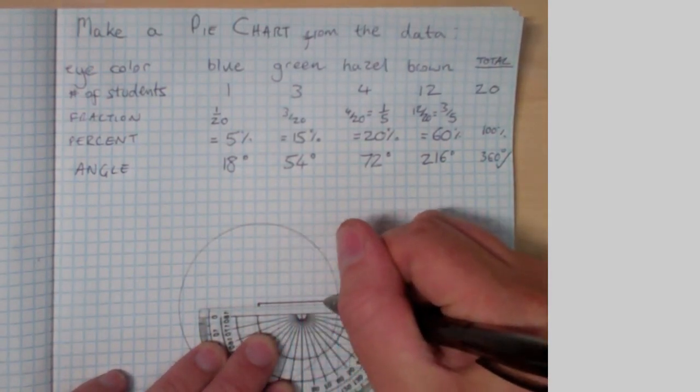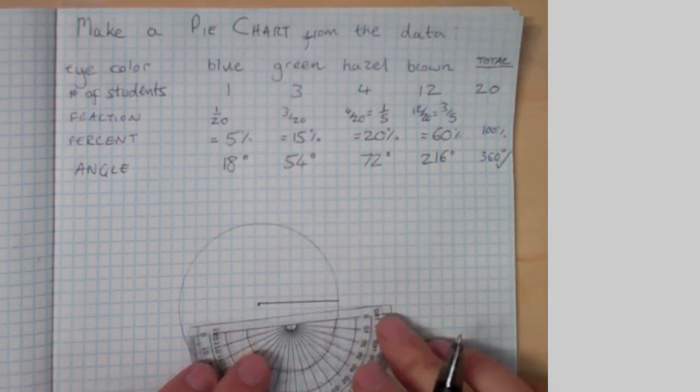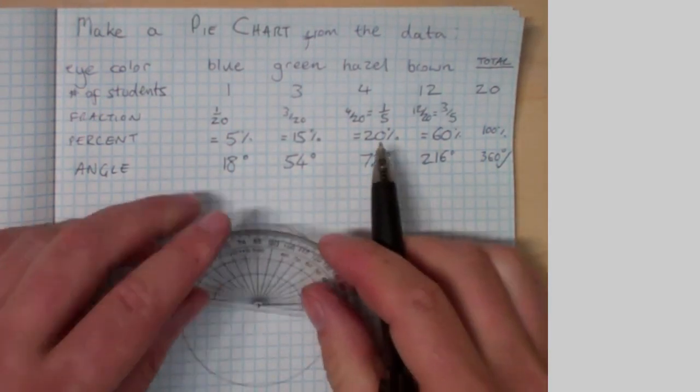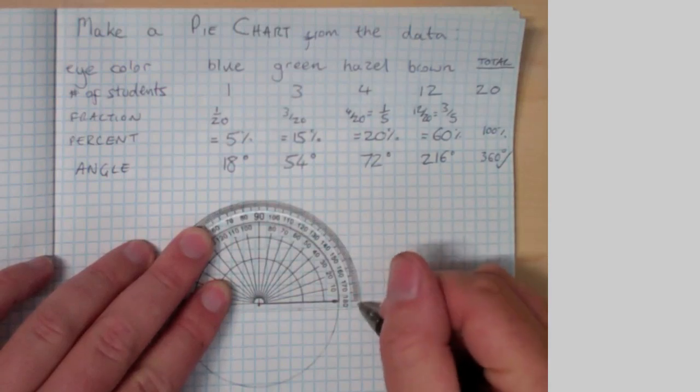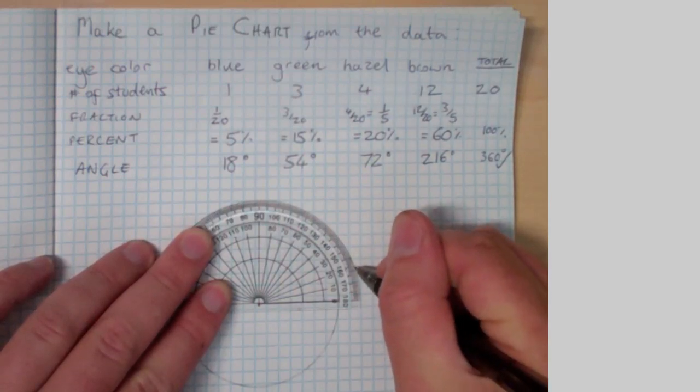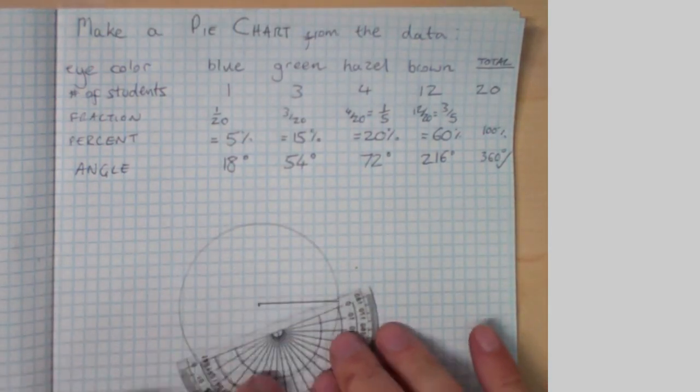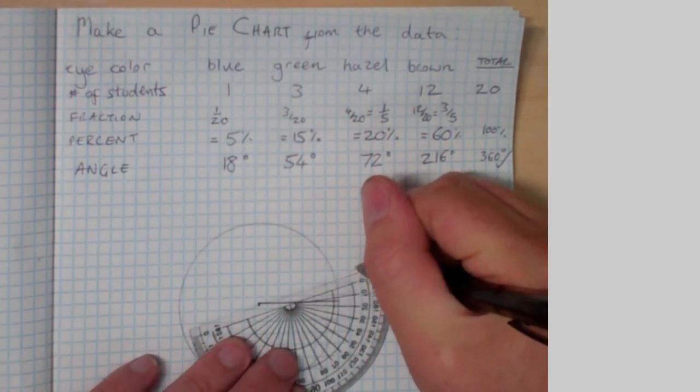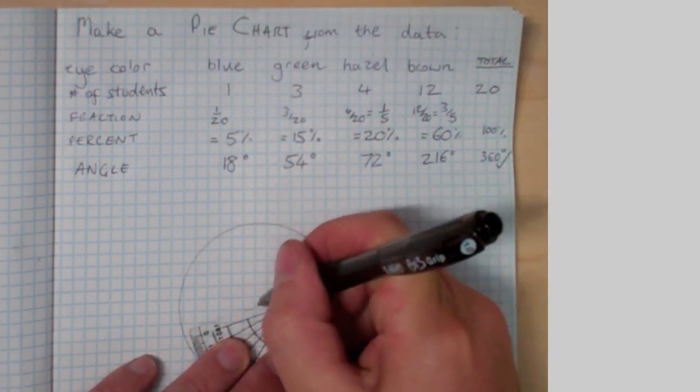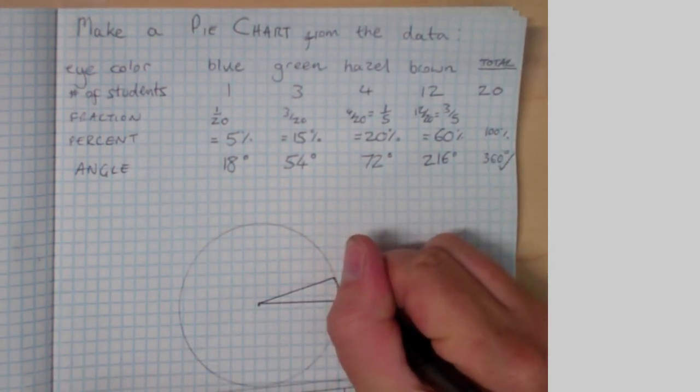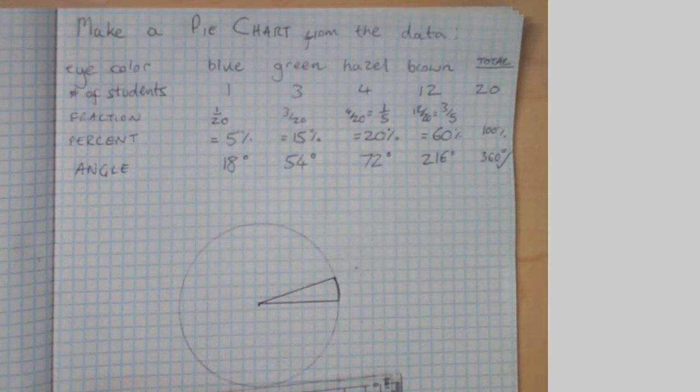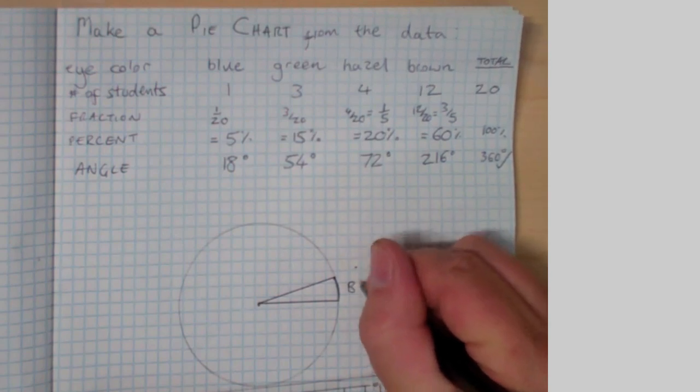Get a protractor, put the protractor, center the protractor at the center of the circle. Align the zero degree line on the protractor with the line that we've just drawn and figure out where 18 degrees is. You can see that I'm going to have to put my dot outside of the circle but that's cool. I just join the center of the circle with the edge of the circle along the line that goes past that dot and that's my blue.